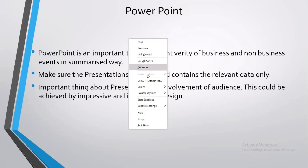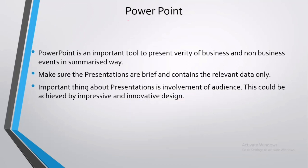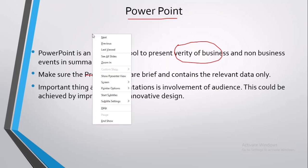Another option is to go to pointer options again and select pen. Use this option to underline something, to cross out something, or to make a circle — just to highlight something.